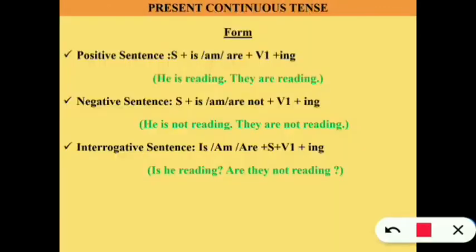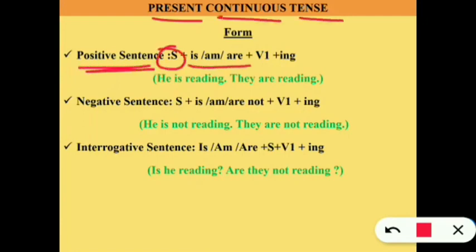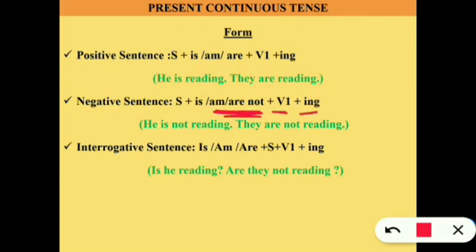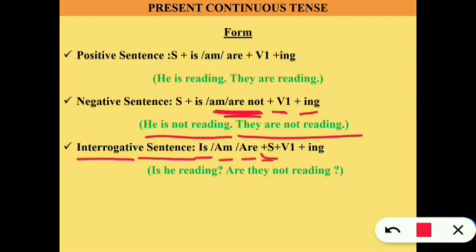Let's move to present continuous tense. In a positive sentence: subject + is/am/are + verb 1 with -ing. Example: 'He is reading' (singular — 'is'), 'They are reading' (plural — 'are'). In a negative sentence: subject + is/am/are + not + verb 1 with -ing. In an interrogative sentence: is/am/are is placed at the front, then subject, then verb 1 with -ing. Example: 'Is he reading?' or 'Are they not reading?'